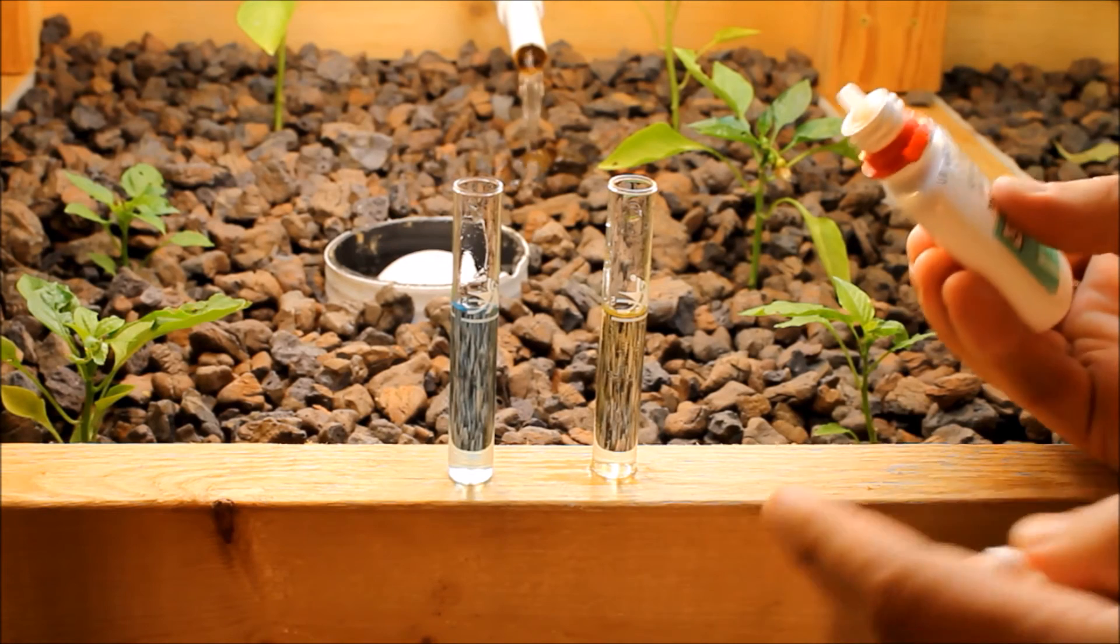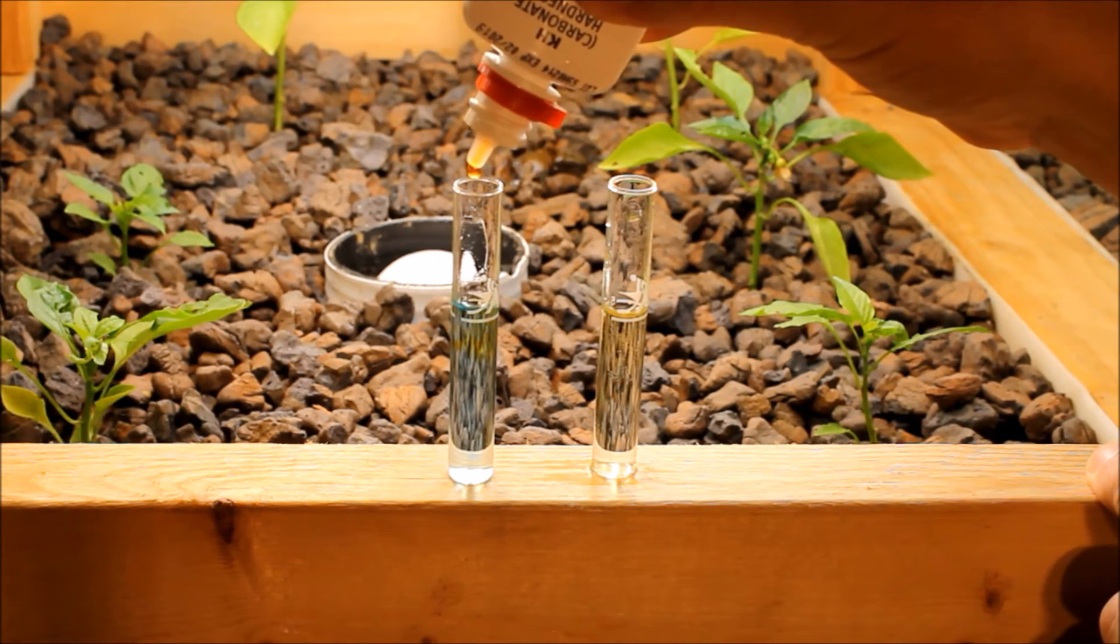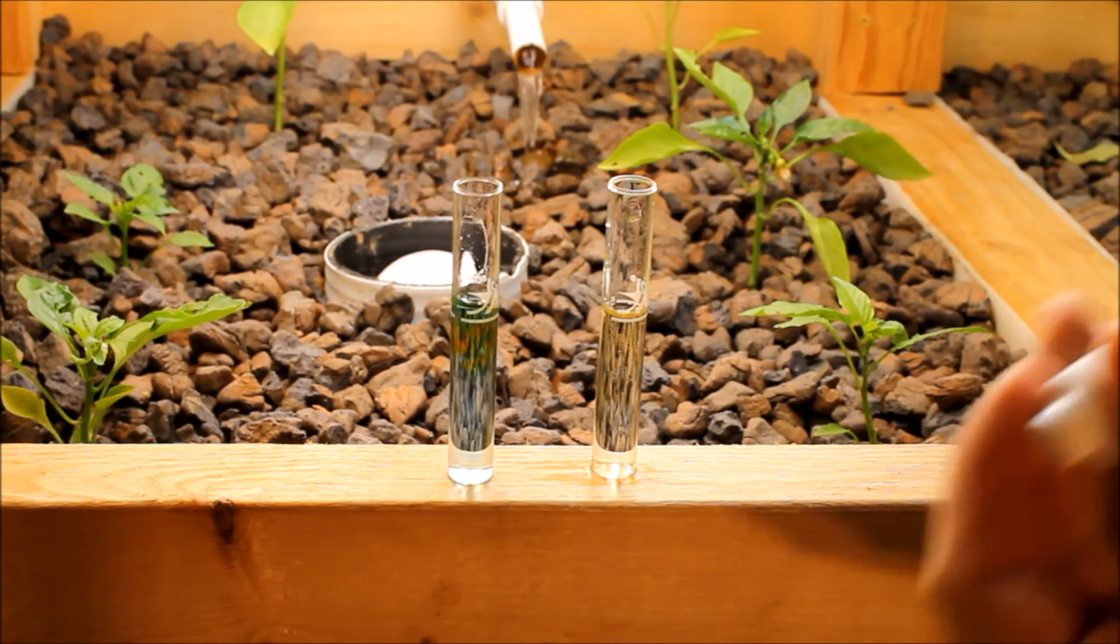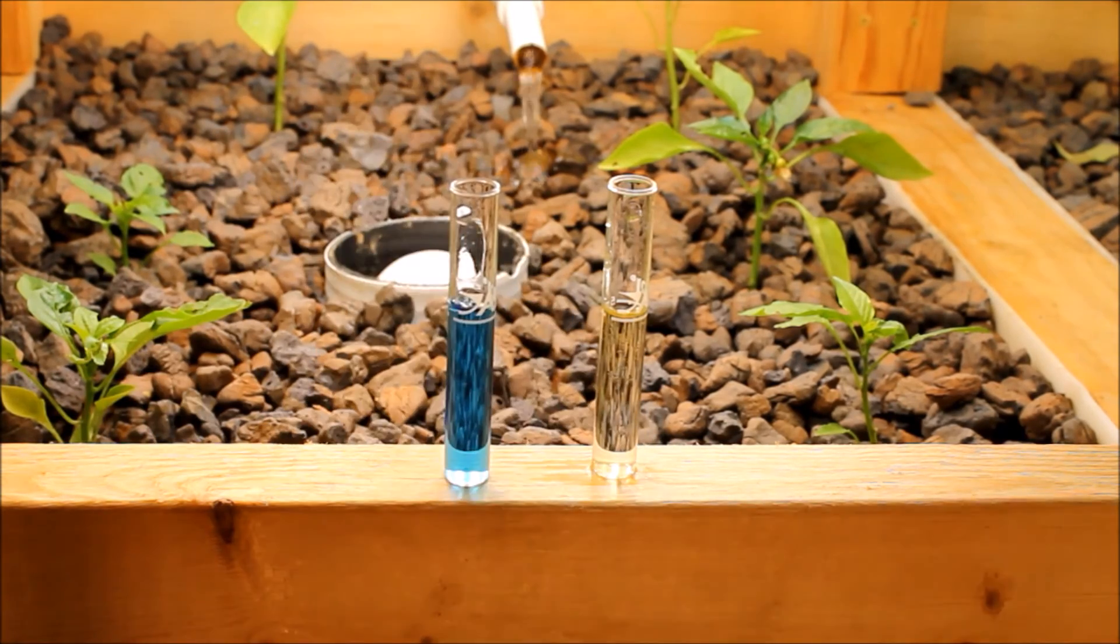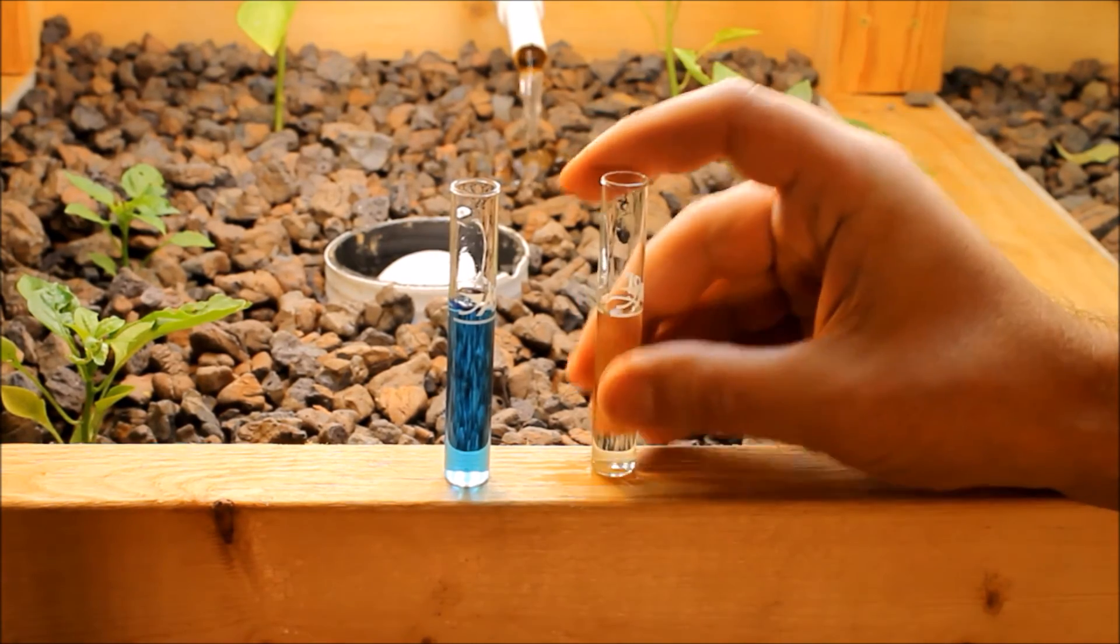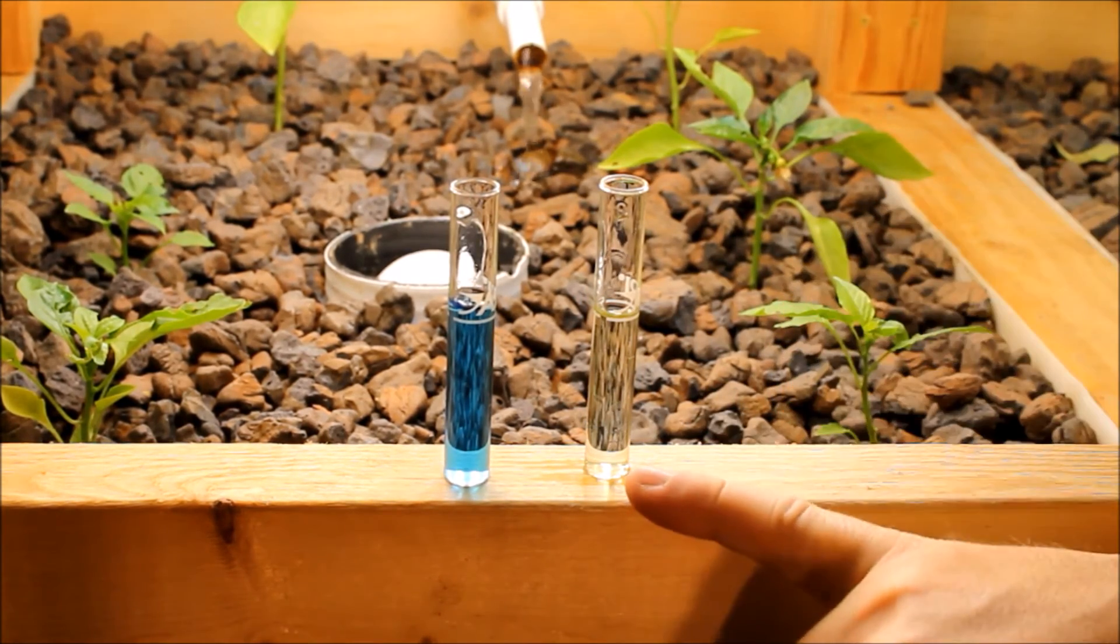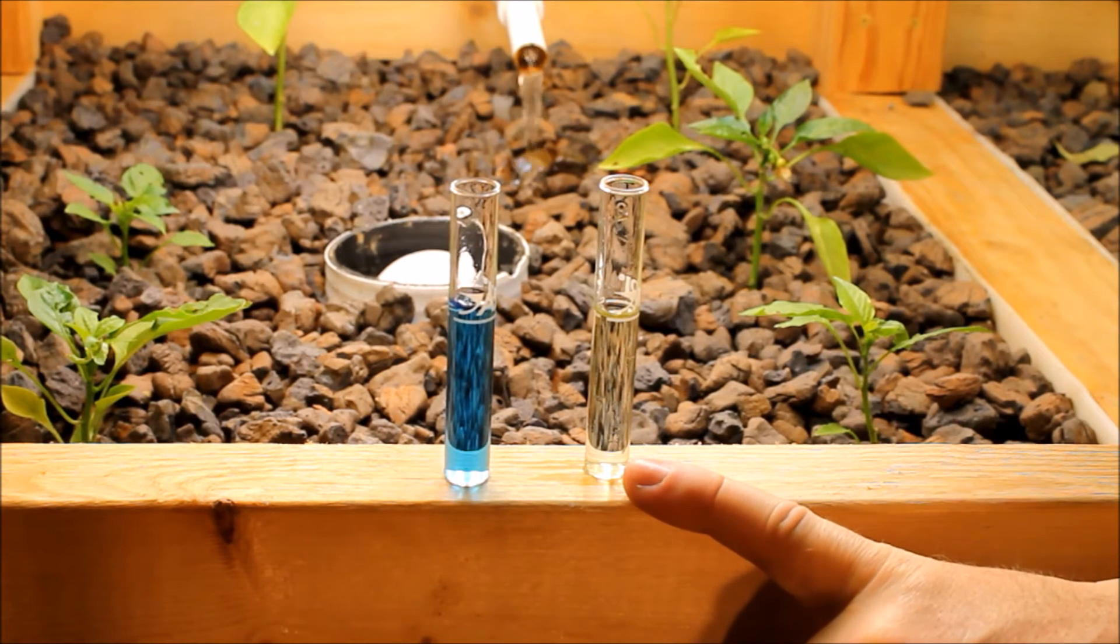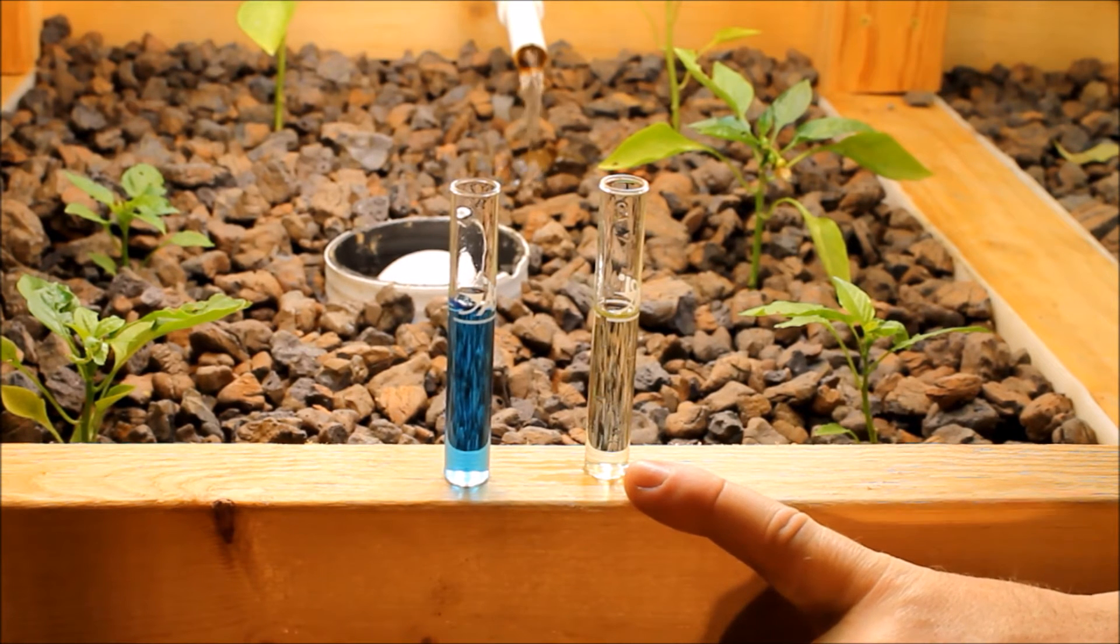You just keep adding drops to this water until it turns yellow and you count the number of drops that you add. As you can see for our filtered water, it already turned yellow with just one drop, and that just means there's zero, there's no carbonates, there's no carbonate hardness to this water.